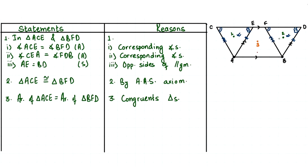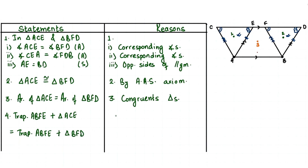We have now proved that triangle 1 equals triangle 2. The next step is to add trapezium ABFE to both sides. So statement four is: trapezium ABFE plus triangle ACE is equal to trapezium ABFE plus triangle BFD. The reason is that we are adding trapezium ABFE to statement three — adding it to both sides.